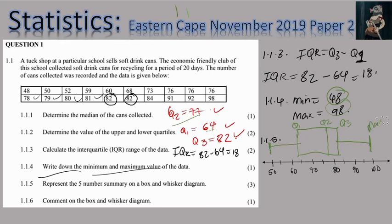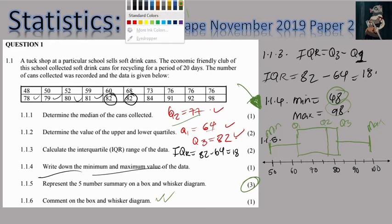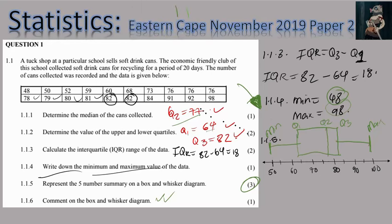The box and whisker is labeled with min, max, Q1, Q2, and Q3 — that's the three marks. The question then says comment on the box and whisker diagram. When we say comment, we want you to say whether it is negatively skewed, positively skewed, or symmetrical. This box and whisker is negatively skewed.